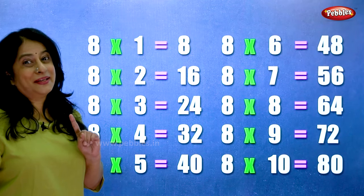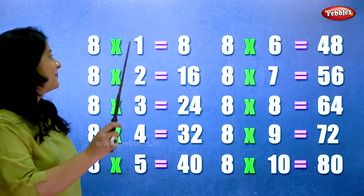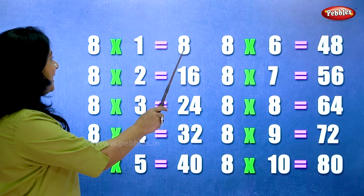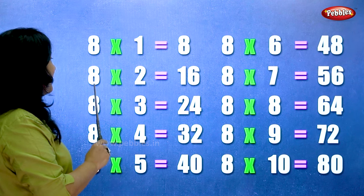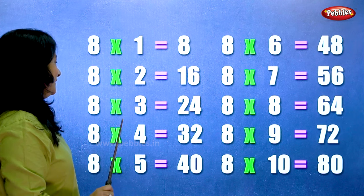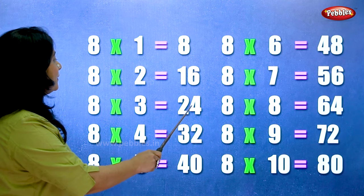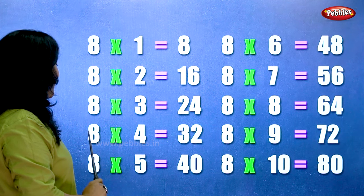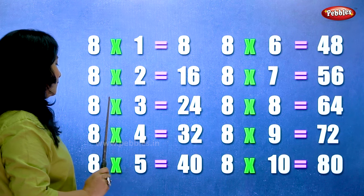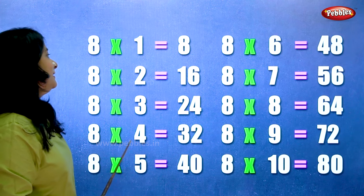Let's learn the table of 8 one more time. 8 1s are 8. 8 2s are 16. 8 3s are 24. 8 4s are 32. 8 5s are 40.